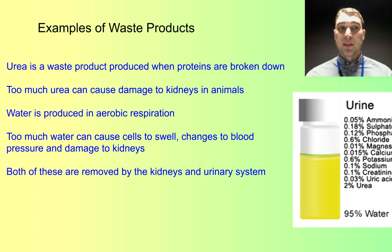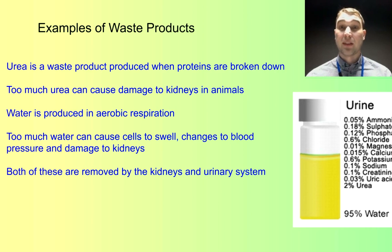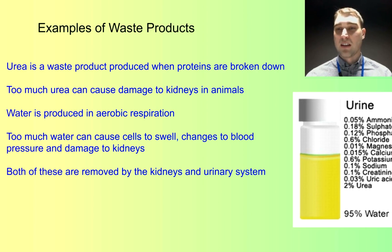Some other waste products that need to be removed: urea is produced when you break down protein and contains a lot of nitrogen, getting rid of your waste nitrogen. Too much urea floating around your body will damage your kidneys. Water is also produced in aerobic respiration, and too much water is bad — it can cause cells to swell, change salt concentrations so nerves stop working, alter blood pressure, and damage the kidneys. If you drink too much water, you can die. Both urea and water are removed by the kidneys. Water is also removed through the lungs, but urea is specifically removed through urination — urine contains urea as the main waste product, with a small amount also lost through sweat.